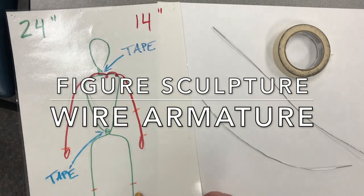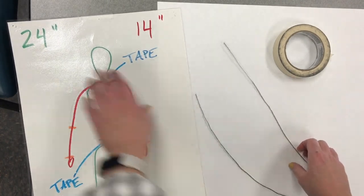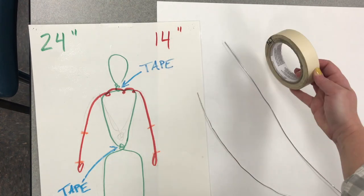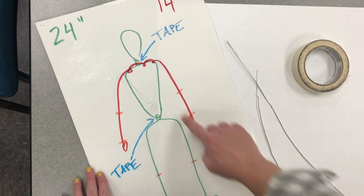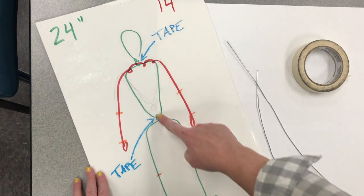Here's how to make the wire armature for your figure sculpture. You'll need two pieces of wire, one 24 inches, one 14 inches. You'll need masking tape and take a look at this diagram.